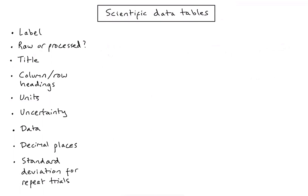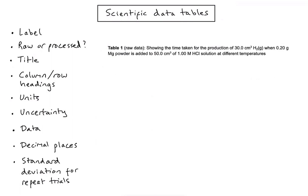Let's take a look at a good example to see where those features apply. First, we want a title, and we should always label our tables — in this case the label is simply a numbered table, so 'Table 1'. This means we can refer to it in our text or lab report so the reader knows exactly what we're talking about. It's also useful to identify whether your data is raw or processed, so I've indicated in brackets after the label that this is a raw data table.